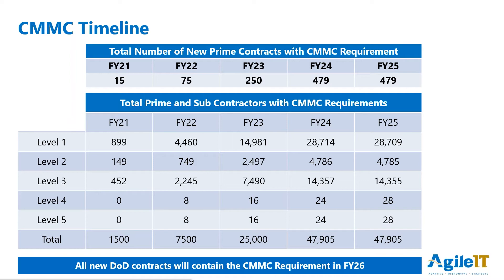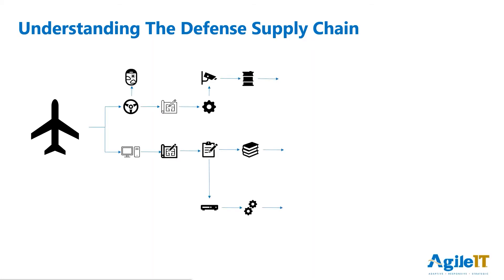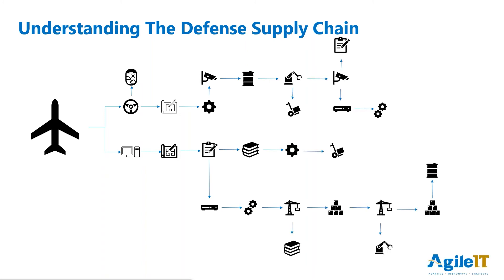Before we get into the different levels of CMMC, I want to talk about the defense supply chain. Making an airplane is complicated — the F-35 program alone has nearly 1,900 contractors in 45 states accounting for over 254,000 jobs. Electronics, cables, bolts, glass, gears, paint, manuals, training, and weapon systems are all produced under a massive web of contracts, subcontracts, purchase orders, and off-the-shelf purchases. The worldwide industrial complex that enables research and development, design, delivery, and maintenance of military hardware and software is known as the Defense Industrial Base, or DIB.